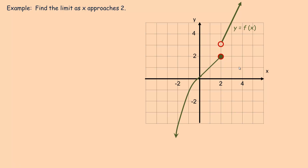Flipping to the next page: this is called a piecewise function because it has different parts, or pieces. At x = 2, the function has a jump in the graph. Coming along from the left, getting close to x = 2, the y-value is approaching 2 as well. The point (2, 2) is on the graph — that's what the solid circle means. So the left-hand limit is 2.